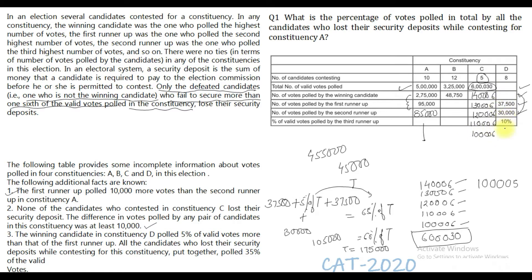There is one more case where only the first two persons get more than one-sixth of the votes, but that would not match the remaining conditions. So there is only one possibility: the total number of valid votes is 1,75,000. The winning candidate gets 37,500 plus 5% of 1,75,000. Five percent of 1,75,000 is 8,750. So the winner gets 37,500 plus 8,750, which equals 46,250 votes.